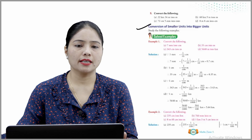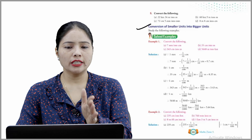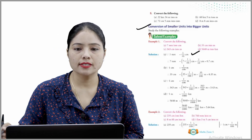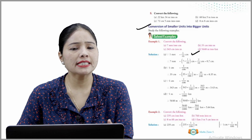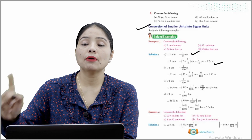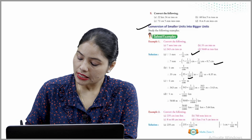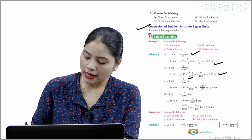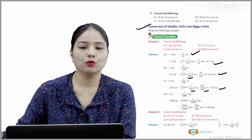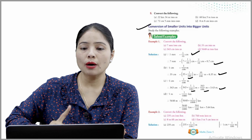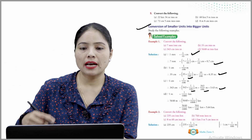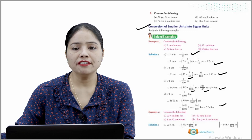Now, conversion of smaller unit into bigger units. Example 1 — convert the following. Part A: 7 mm into centimeters. To change mm to cm, 1 mm = 1/10 cm, so 7 mm = 7 × (1/10) = 0.7 cm. Part B: 35 cm into meters. 1 cm = 1/100 m, so 35 cm = 0.35 m. Part C: 343 cm into meters = 343/100 = 3.43 m. Part D: 5640 m into km = 5640/1000 = 5.64 km.